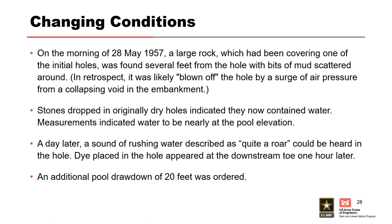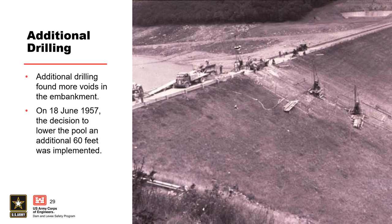These observations initiated another 20-foot pool drawdown. A grout mixing plant and additional drilling equipment were mobilized, but the Ohio River Division ordered grouting be delayed while further exploratory drilling continued. On June 10th, over a month after the initial report of muddy flow, one of the drill holes in the embankment encountered a void in the impervious core just above the grout cap. No remedial action was taken, and drilling continued until the 18th of June, when two more holes encountered voids. This finally led to a decision to lower the pool an additional 60 feet.